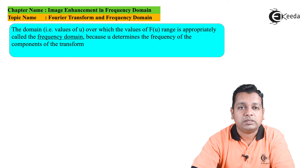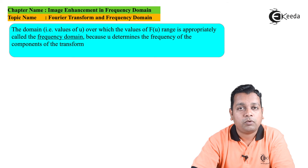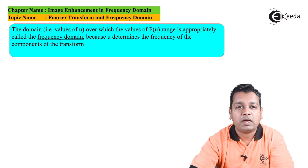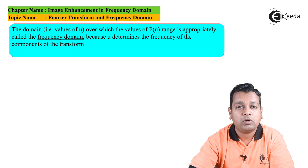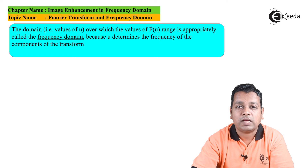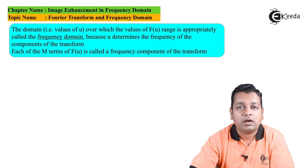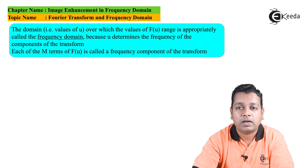The domain represented by the values of u over which F(u) ranges is called the frequency domain, because u determines the frequency of the components of the transform. Each of the M values represented in F(u) is called a frequency component of the transform.